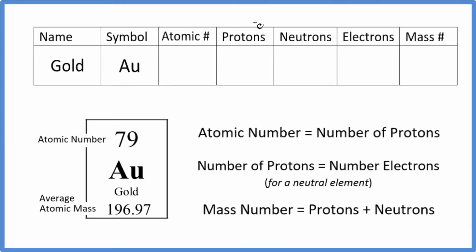In this video, we'll take a look at the protons, neutrons, electrons, and the mass number for Au. That's gold.